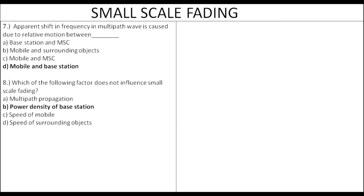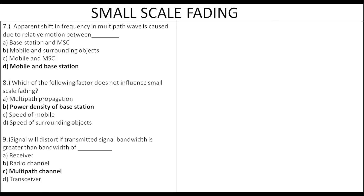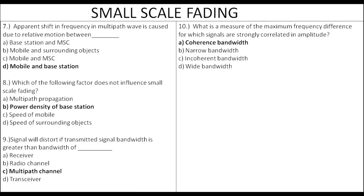The transmitted signal is distorted when the bandwidth of the transmitted signal exceeds that of the multipath channel, and the received signal is distorted. Coherence bandwidth uses maximum frequency to control the upon-demanded times. The difference is strongly correlated in amplitude — that is the coherence bandwidth.